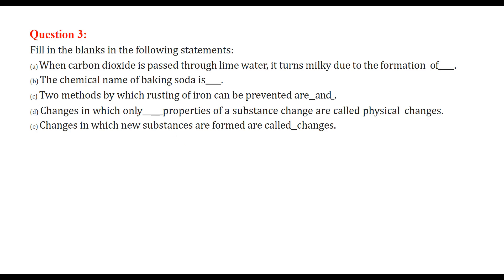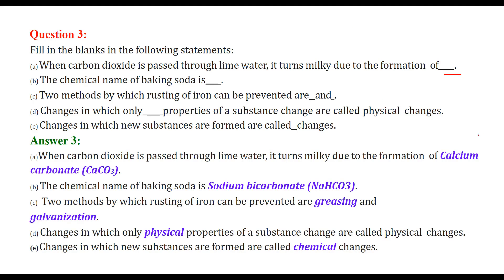Fill in the blanks: when carbon dioxide is passed through lime water, it turns milky due to the formation of calcium carbonate (CaCO₃). The chemical name of baking soda is sodium bicarbonate. Two methods by which rusting of iron can be prevented are greasing and galvanization. Changes in which only physical properties of a substance change are called physical changes; changes in which new substances are formed are called chemical changes.